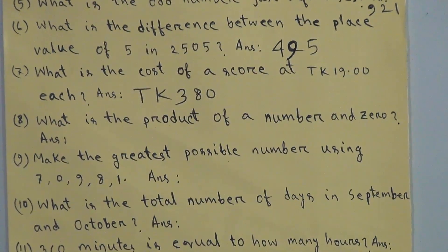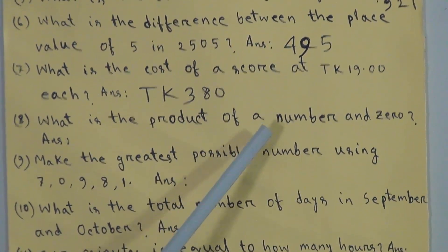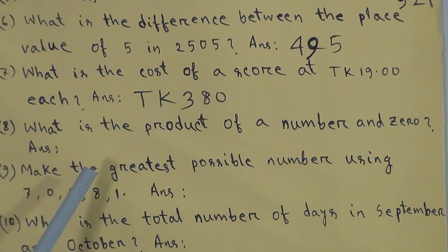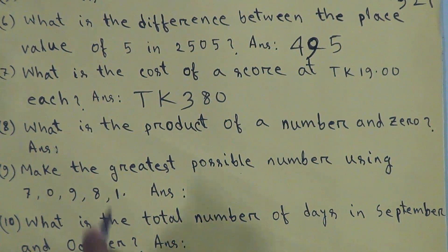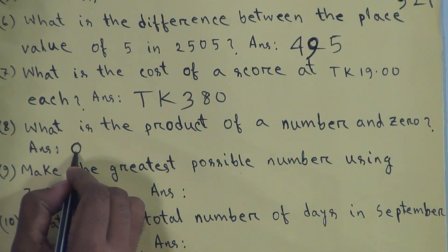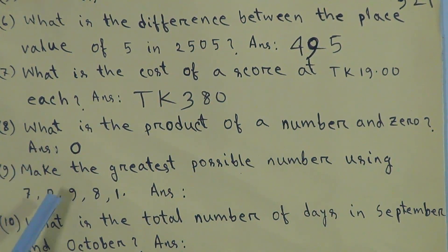Question 8: what is the product of a number and zero? We know that if we multiply any number by zero, the answer is always zero — for example, 100 × 0 = 0, 8 × 0 = 0. So the answer is zero.